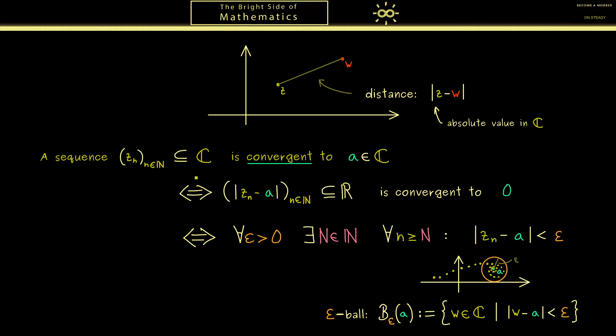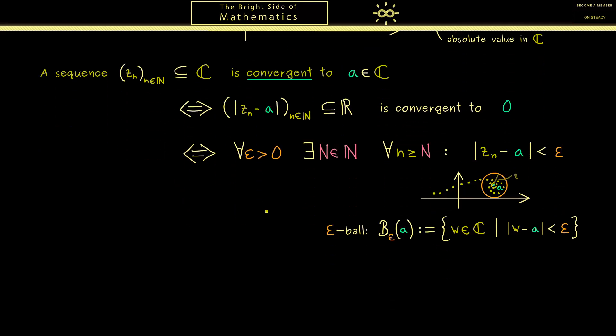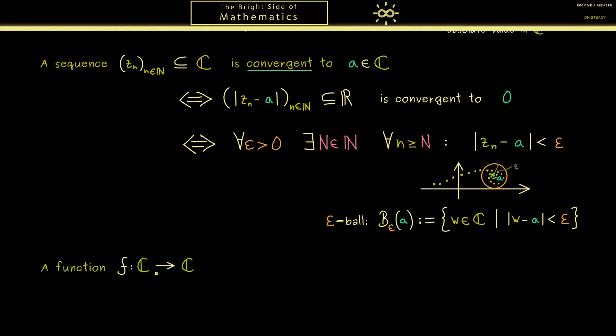Because you now know what a convergent sequence in the complex numbers is, you also know what a continuous function between C and C is. In fact it has exactly the same meaning as for real functions. Hence small deviations, small errors in the input should be translated into small errors in the output. Indeed this can be formulated with sequences.